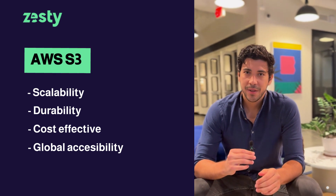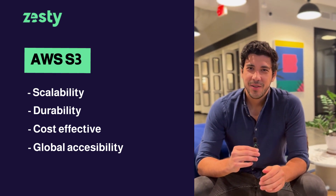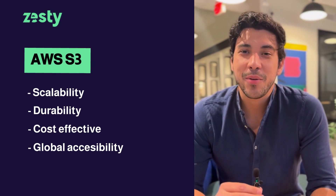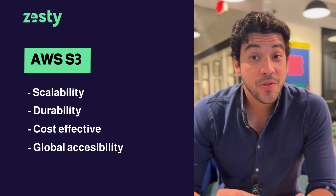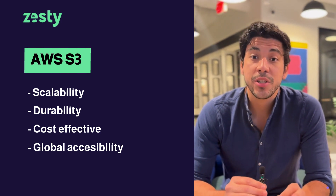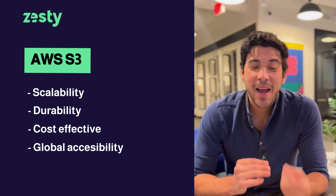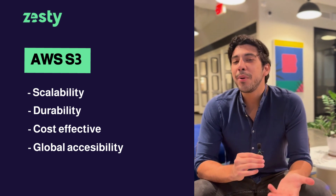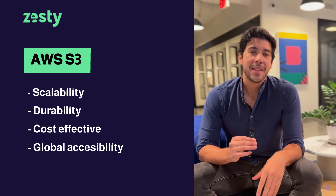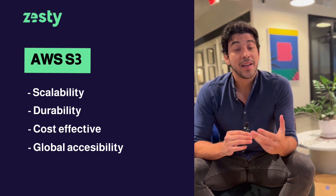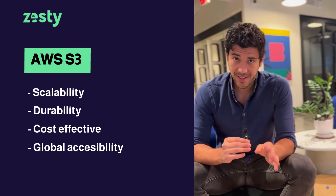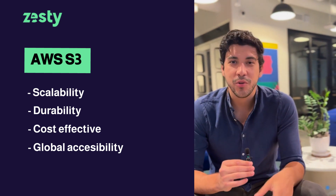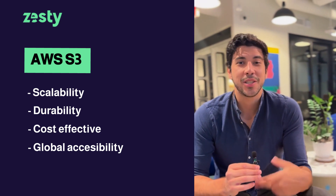First up, Amazon S3. S3 is designed for scalable, high availability object storage, perfect for storing unstructured data like images, videos, backups, and logs. Scalability: handles unlimited data, scaling automatically. Durability: 99.9% durability with automatic replication across multiple facilities.